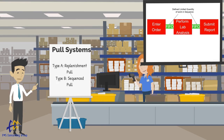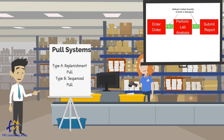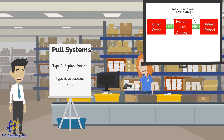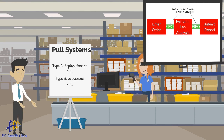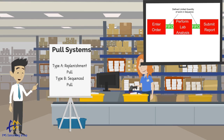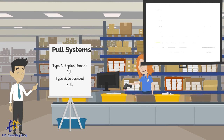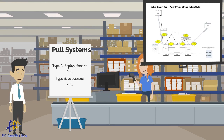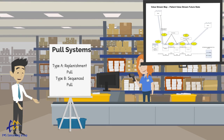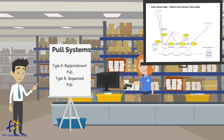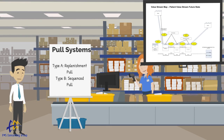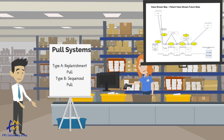Type B systems typically have less inventory than Type A, but there are many cases where a Type A system is the better choice. By value stream mapping the entire flow, it becomes easier to see when to use each of these types of pull systems.